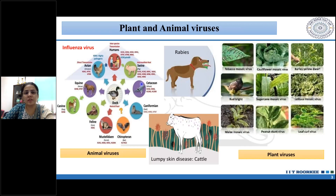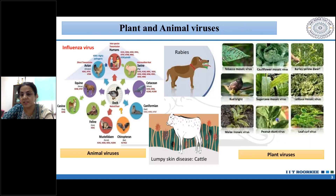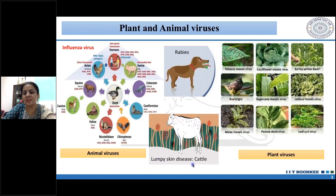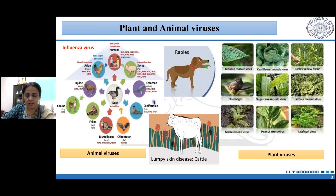Not all viruses are infectious, but many cause diseases in animals, plants, and humans, leading to epidemics and pandemics. Plant viruses cause significant economic losses in agriculture. Animal viruses include influenza and rabies. Currently in India, in states like Gujarat, Rajasthan, Haryana, and UP, we are seeing lumpy skin disease especially in cows. These viruses are very pathogenic and can lead to loss of life as well as significant economic losses in the agriculture sector.